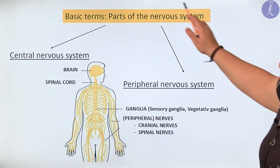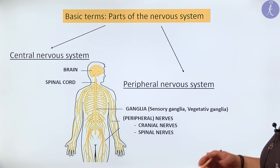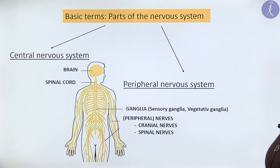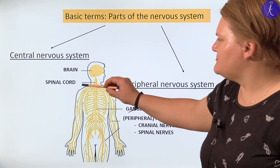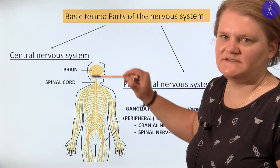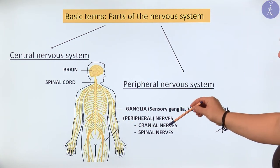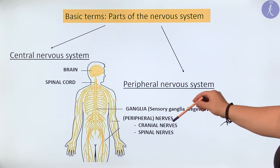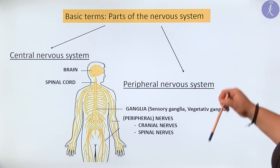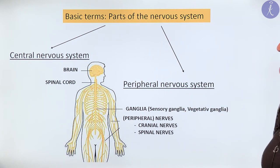The nervous system can be divided into two main parts based on anatomy. The brain with the spinal cord together belong to the central nervous system, but the nerves — which can be cranial and spinal nerves — with their ganglia, which can be sensory or autonomic ganglia, they belong to the peripheral nervous system.